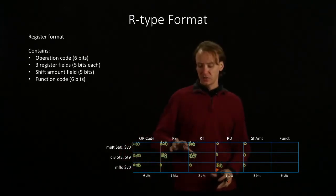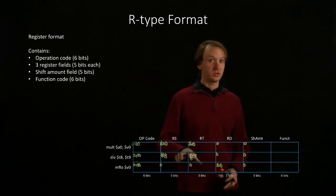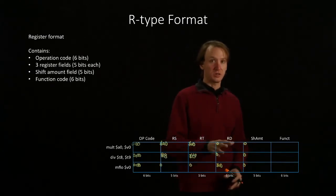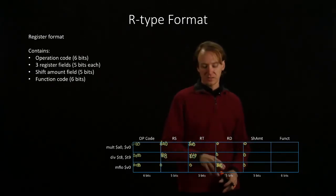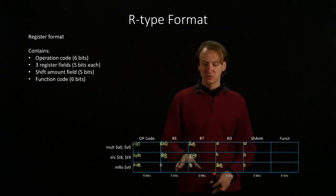In this case, I have two instructions that have two source registers but no destination register. And a third instruction that has a destination register, but no source registers.